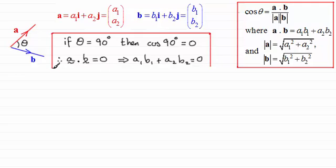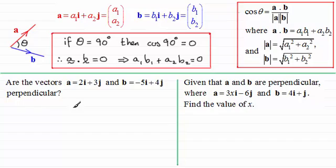Now I've got a couple of examples and here they are. You might in fact like to try them. But for the first one we've got the vectors a equaling 2i plus 3j and b equaling minus 5i plus 4j perpendicular. And so to test this all I need to work out is a dotted with b.